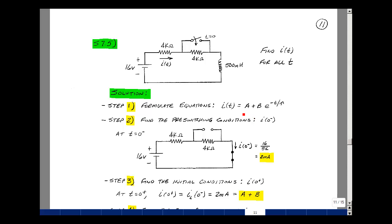Step 1 is to formulate the equations. So we have the solution of a first-order differential equation, which is a plus b times e to the minus t over tau for any voltage or any current in our circuit.